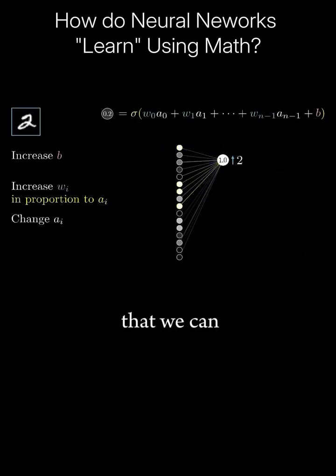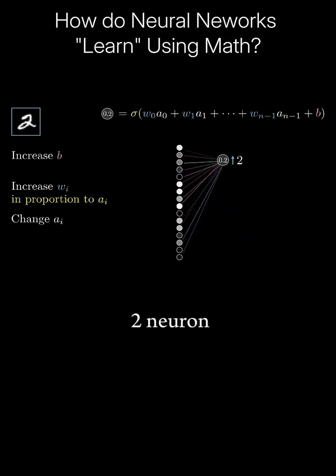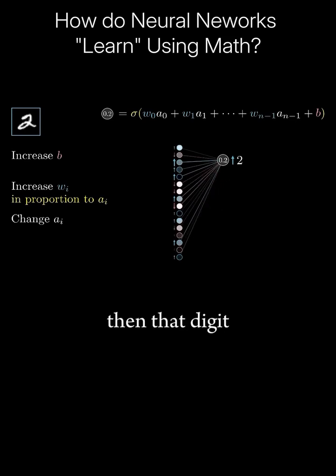The third way that we can help increase this neuron's activation is by changing all the activations in the previous layer. Namely, if everything connected to that digit 2 neuron with a positive weight got brighter, and if everything connected with a negative weight got dimmer, then that digit 2 neuron would become more active.